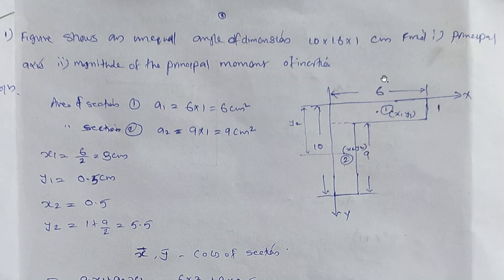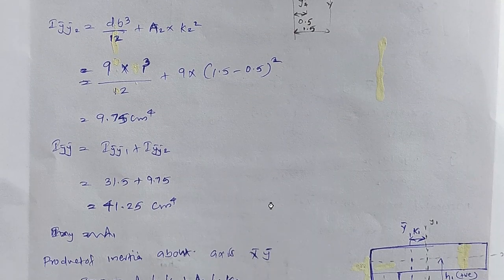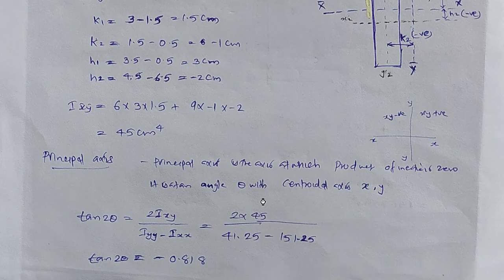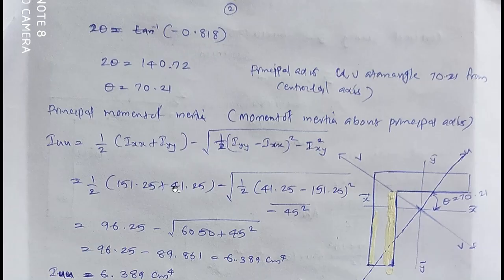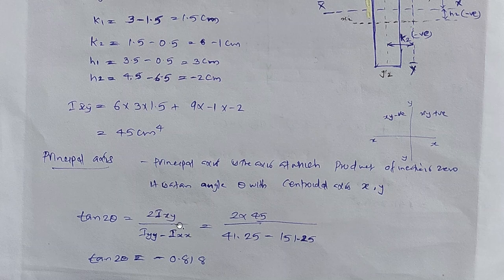Let's start with the centroidal axis. The principal axis is inclined at an angle theta with respect to the centroidal axis. The equation is: tan 2θ = 2·Ixy / (Iyy − Ixx), where Ixy is the product of inertia about the centroidal xy axes, Iyy is the moment of inertia about the centroidal y-axis, and Ixx is the moment of inertia about the centroidal x-axis.